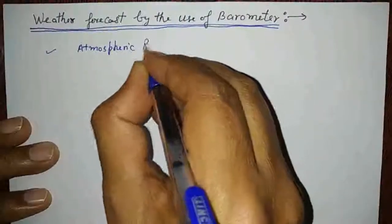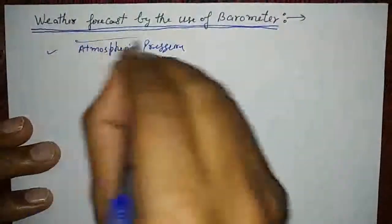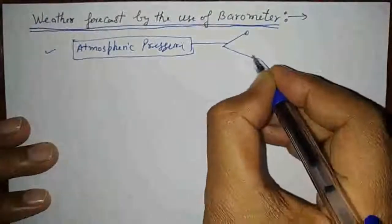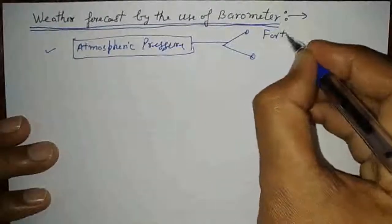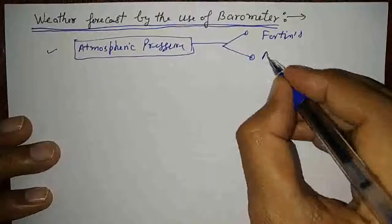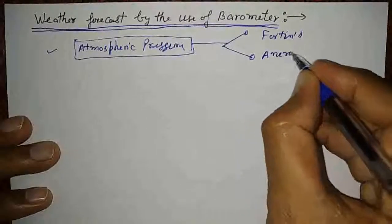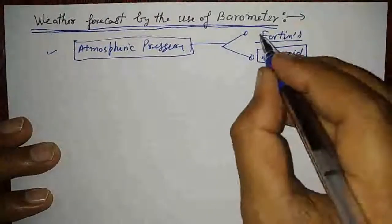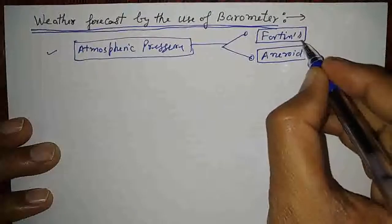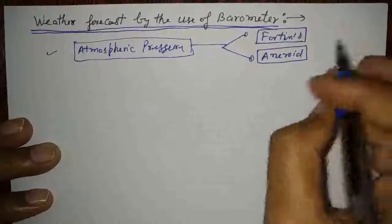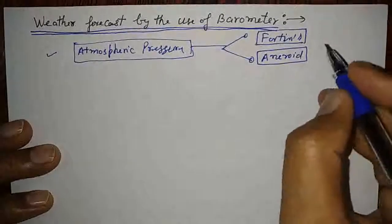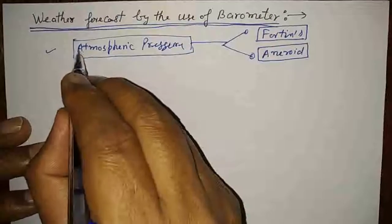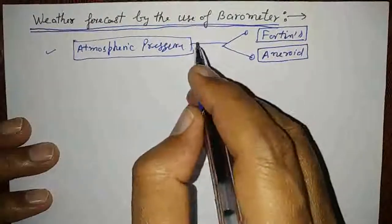Atmospheric pressure is measured by a barometer. Normally two types of barometer are used: one is the Fortin barometer, and the second is the aneroid barometer. According to need, the Fortin barometer is fixed and mounted on a wall vertically, whereas the aneroid barometer is portable and easy to handle and can be sent from one place to another.